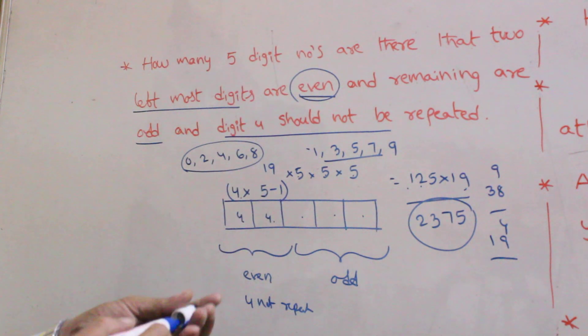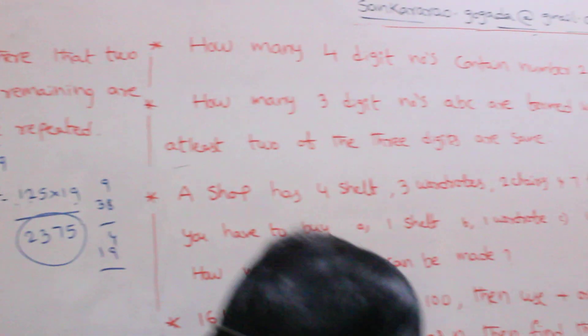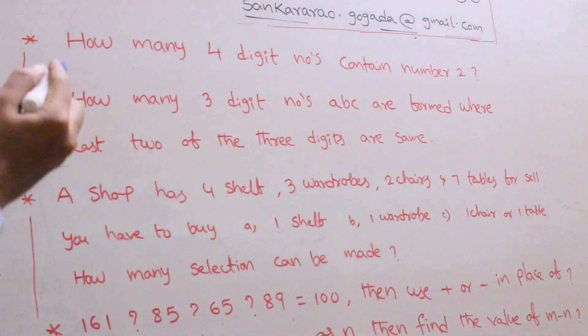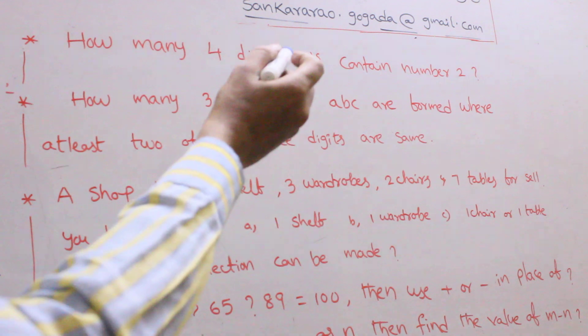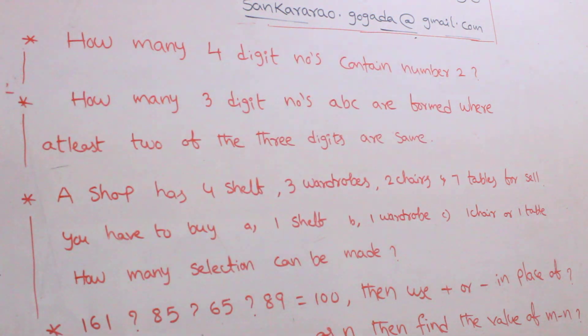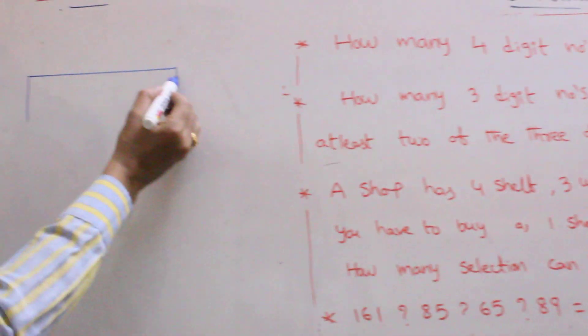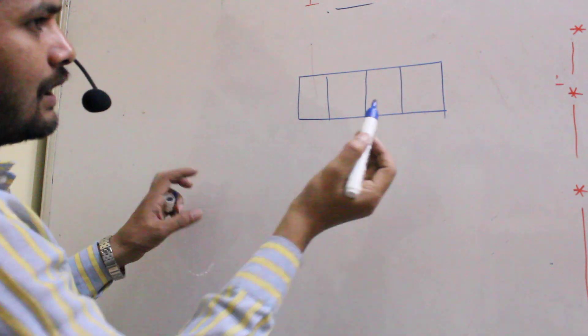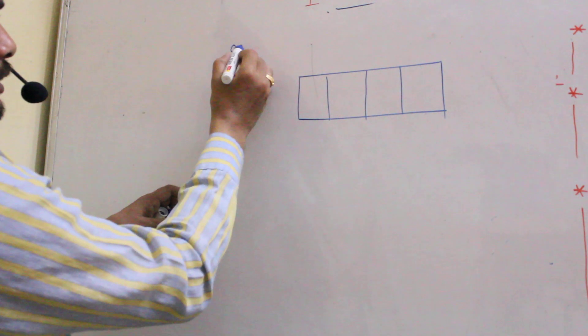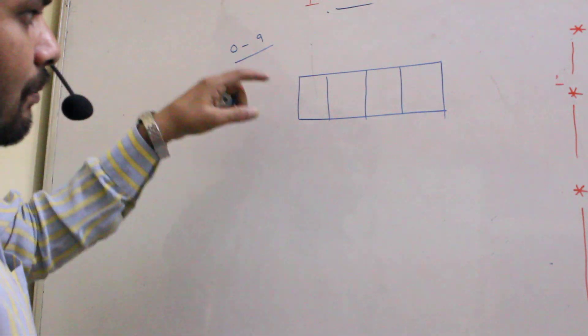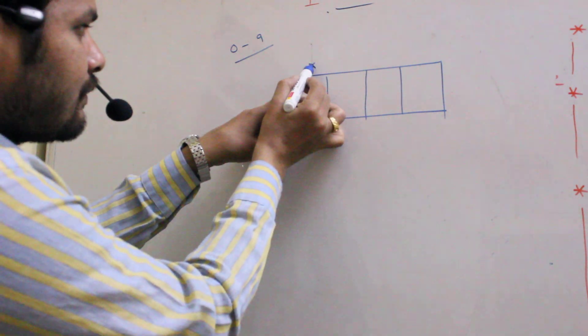Next one, coming to the next question. How many 4 digit numbers contain number 2? 4 digit numbers, generally using the digits 0 to 9. How many digits will be there? 10 digits.